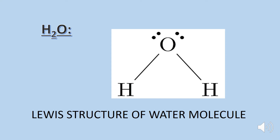Now look at the Lewis structure of the water molecule. Here in the water molecule we have two lone pairs and two bond pairs of electrons. According to the definition of hydrogen bonding, the positively charged hydrogen must attach to oxygen, nitrogen, or fluorine. Here the hydrogen is bonded with oxygen, so the water molecule can easily form four hydrogen bonds.